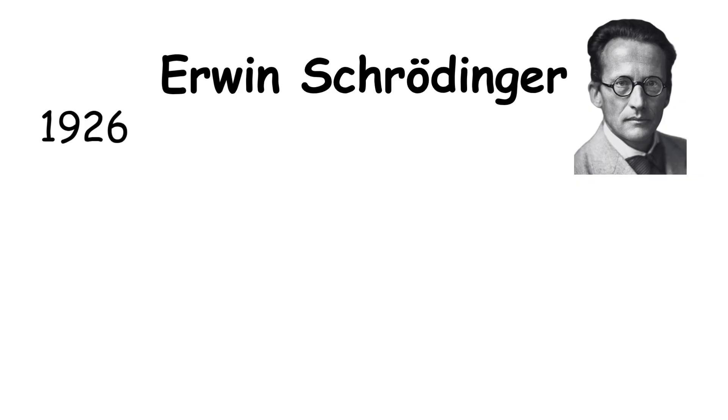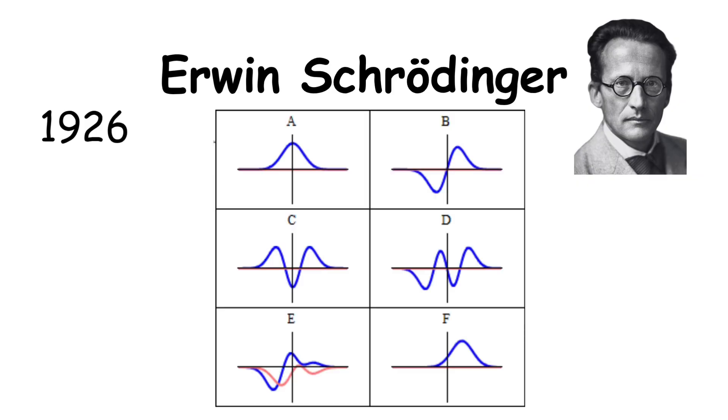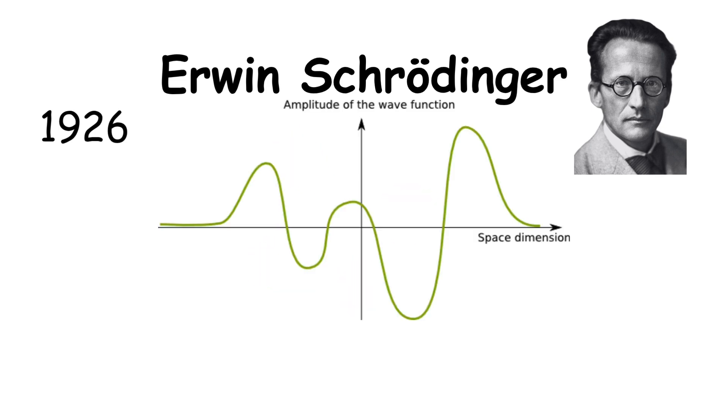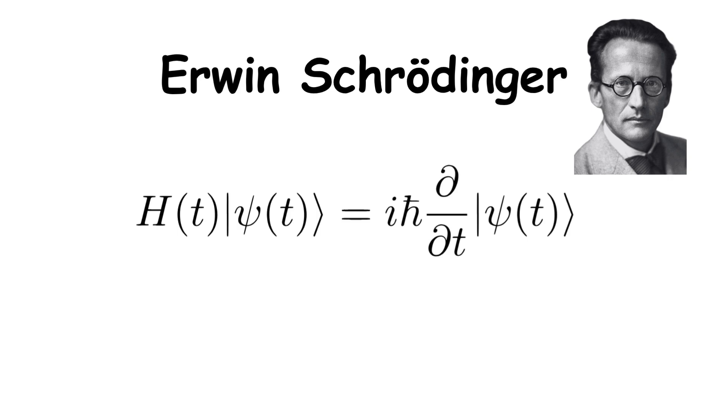Erwin Schrödinger. In 1926, he introduced wave mechanics, showing that particles like electrons could be described as wave functions. His equation, the Schrödinger equation, became a central tool in quantum physics.